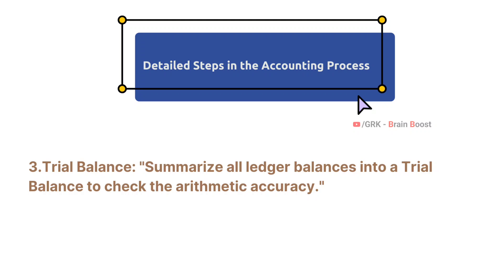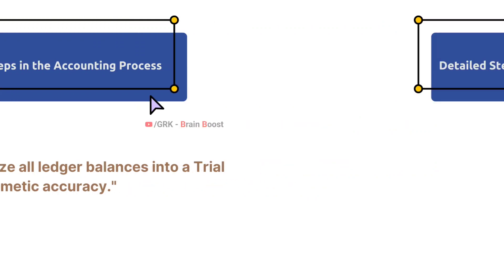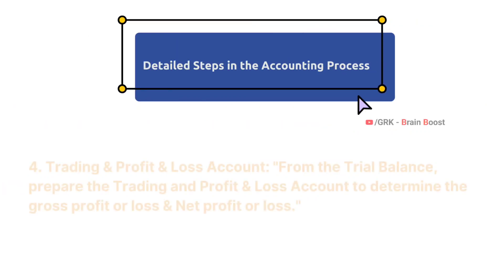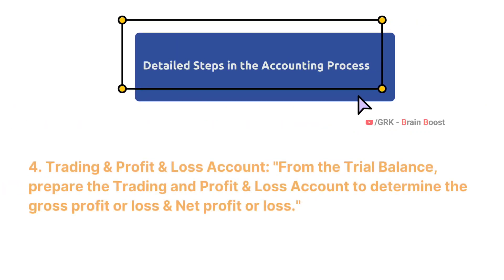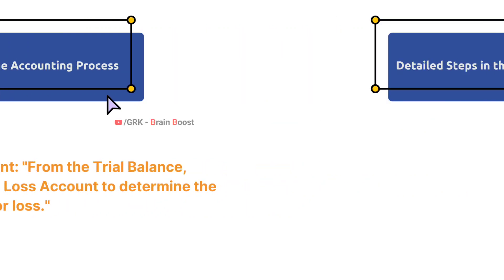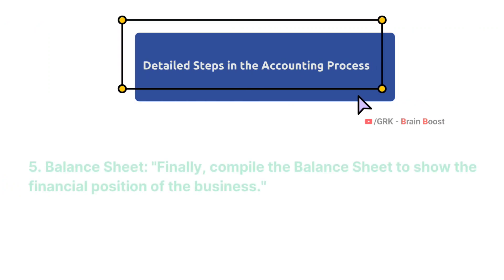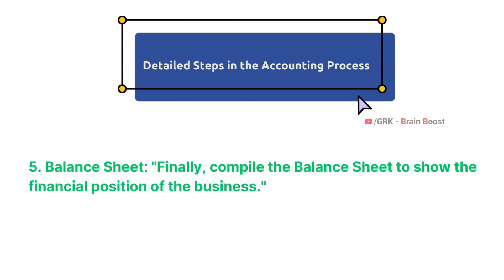From there we summarize all the ledger balances into a trial balance to check the mathematical accuracy. From the trial balance we prepare the trading and profit and loss account to determine the gross profit or loss, and also the net profit or loss of the company. Finally, we prepare the balance sheet to show the financial position of the business.